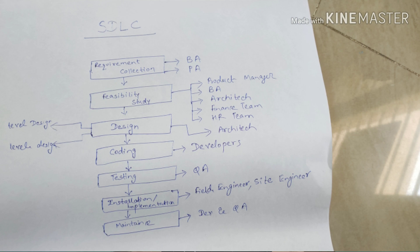If a company doesn't follow SDLC, they will not know what the requirements are. They will not know how much money to invest, what the profit or loss will be at the end, or how many engineers they need to involve in making their software. That is why companies always follow software development life cycle.